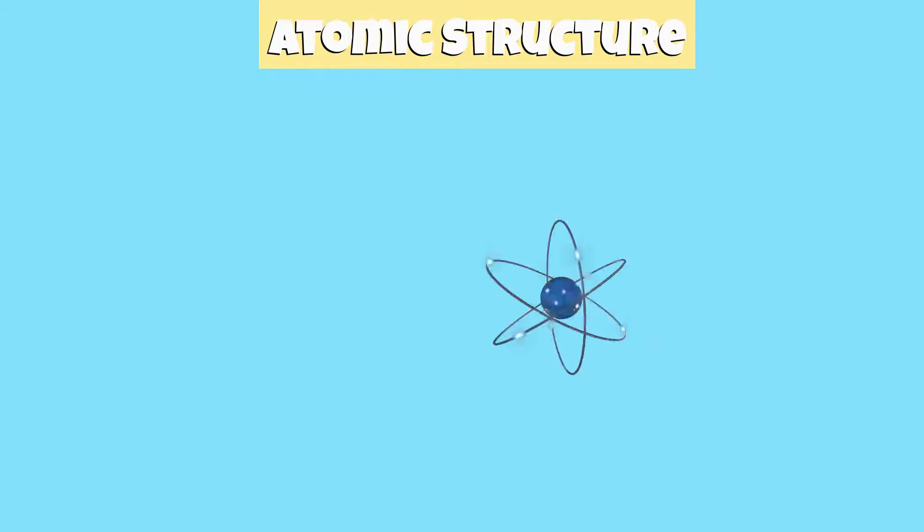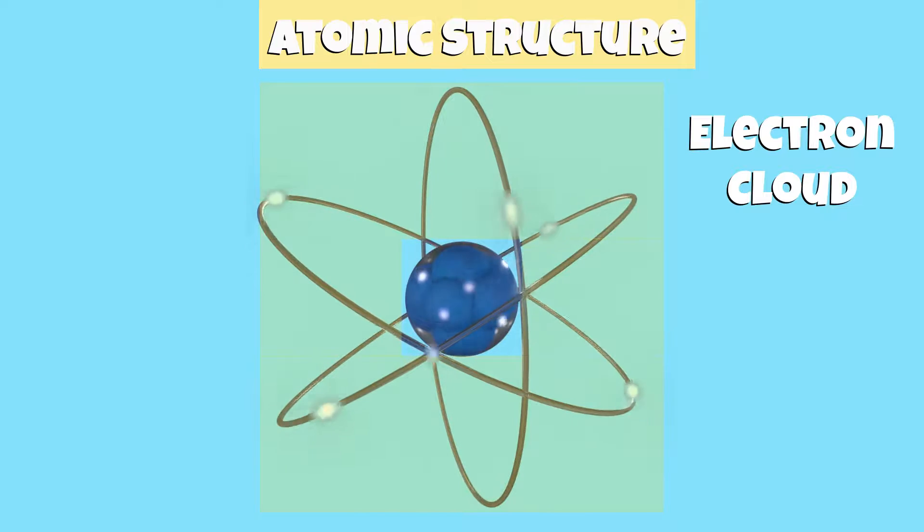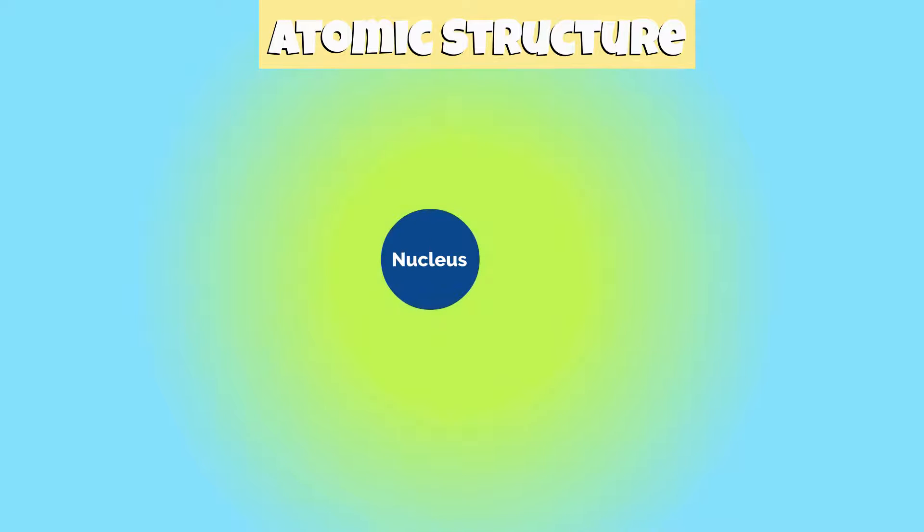The reason why we say electrons are found in an electron cloud is because they're moving and spinning randomly at incredibly high speeds. An electron cloud is a region around the nucleus where there's a high probability of finding an electron.